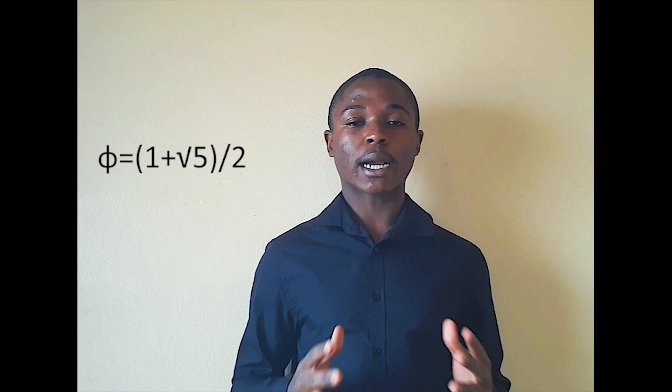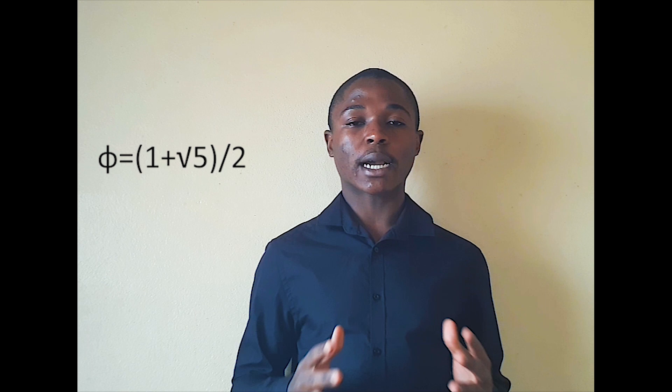Represented by the Greek letter phi, the golden ratio has a numerical value of 1 plus the square root of 5, all divided by 2, which of course is a rational number and can be approximated to 1.168. It can also be called the golden cut, the golden section, the golden mean, the divine cut, or the divine proportion.